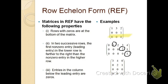The third property: entries in the column below the leading entry are all zeros. Note that entries above the leading entry do not need to be zero for a matrix to be in REF — only those below the leading entry must be zero.